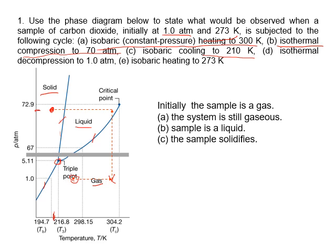Next, isothermal decompression — isothermal means temperature is constant, that's a vertical line, and decompression means pressure goes down. It goes down to one atmosphere, and that point is just entering the gas phase region, so the solid vaporizes after decompression.